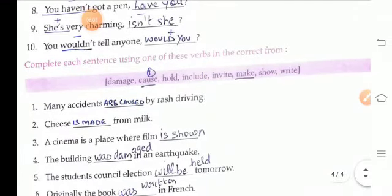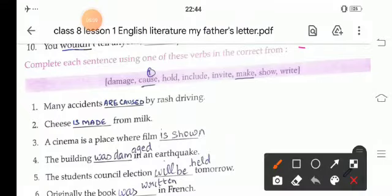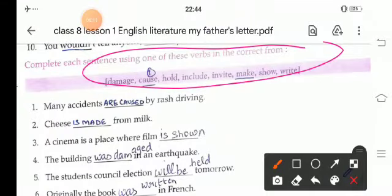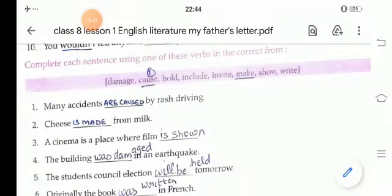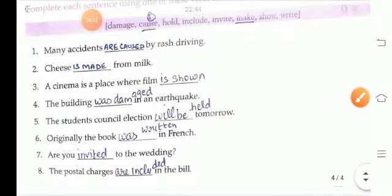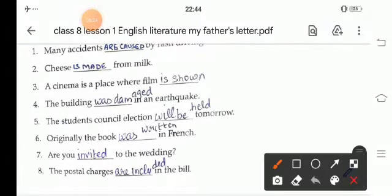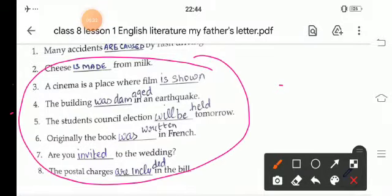Then complete each sentence using one of these verbs. Many accidents are caused by rash driving. Cheese is made from milk. A cinema is a place where film is shown. The building was damaged in an earthquake.